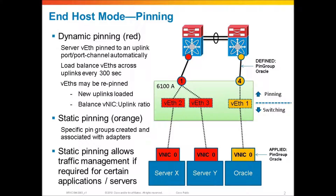The other method is static pinning, which you would define manually to provide some traffic engineering or traffic management for a particular server application. In this case, we've got an Oracle server that we've defined static pinning for. We created a pin group called Oracle in UCS Manager, then went to uplink number four and assigned it to that pin group called Oracle. Then we went to the Oracle service profile, went to VNIC zero here, and applied that VNIC to the Oracle pin group.